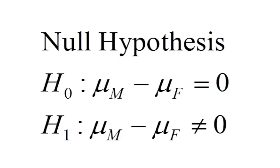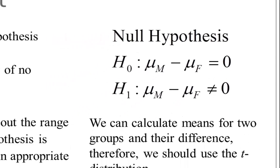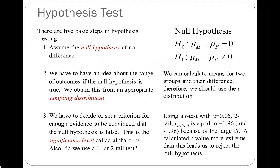I'm going to do a two-tailed test. I'm not predicting a direction — that men make more or less than women — I'm simply stating that men and women make different amounts of income. That's my alternative hypothesis and it's a two-tailed test. Step two: we need an appropriate picture of chance to compare the observed $8,000 difference to what we could observe if chance is operating. For a difference of means test the appropriate sampling distribution is the t-distribution.